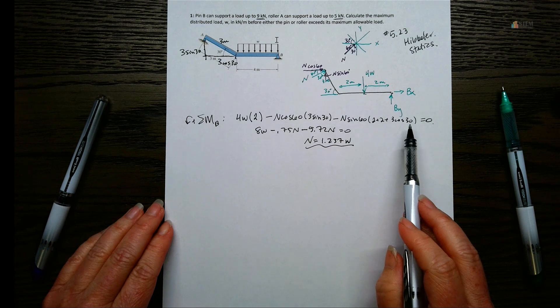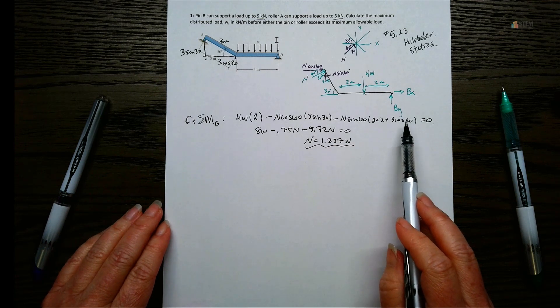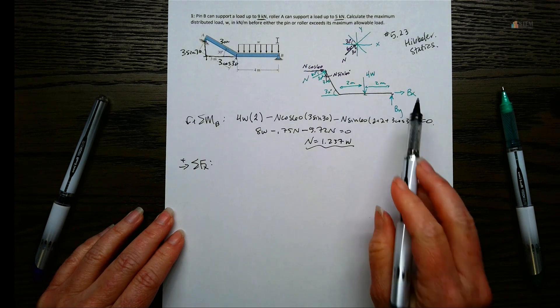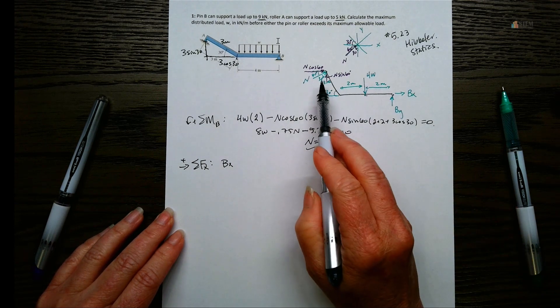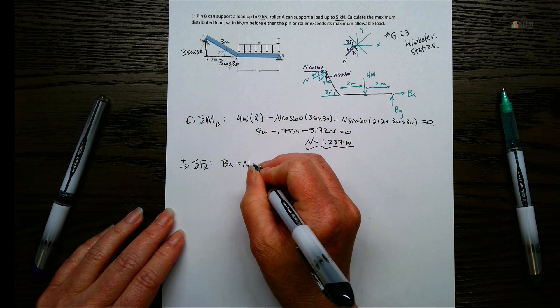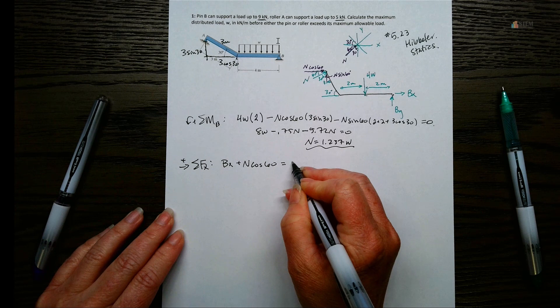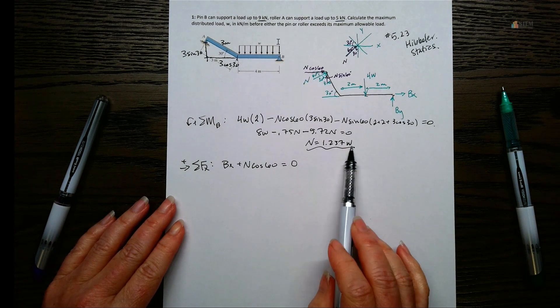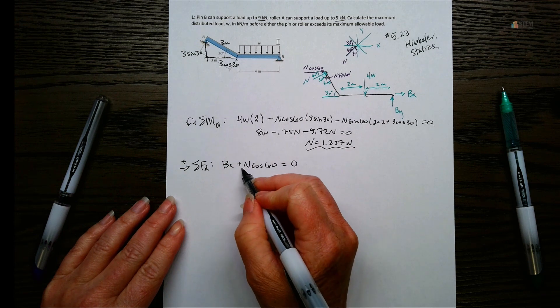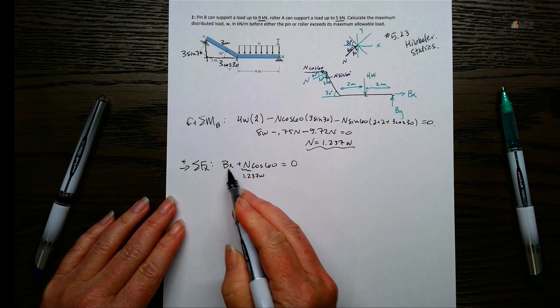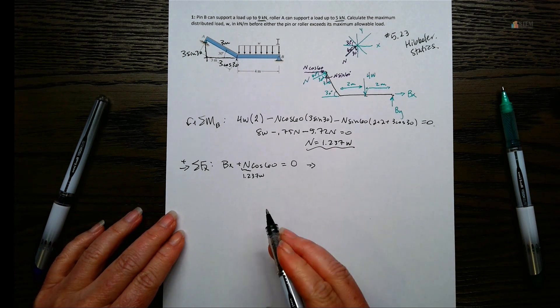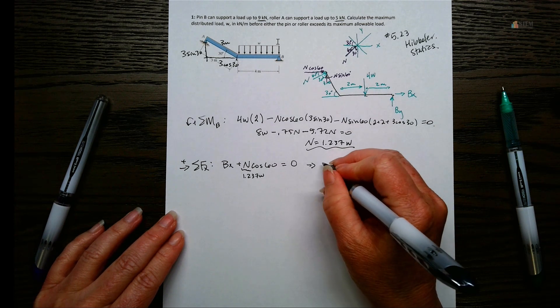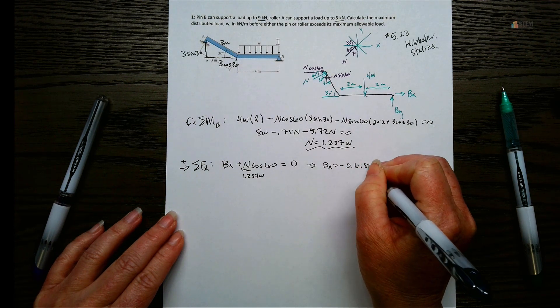Now let's look at the X and Y directions. Let's look at the X direction. Everything in the X direction, I got positive BX because it's to the right. And then I've got this X component here, which is positive. So plus N cosine 60. And then that's going to equal zero. Now remember, we're looking for W. So if I take this and I plug it in here. Now I can get BX in terms of W. So we just do the 1.237 times cosine 60. And then we have the W here. So we're going to have BX is negative 0.6185W.